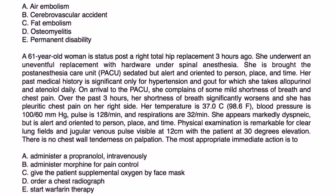Finally, a 61-year-old woman is status post a total hip replacement under spinal anesthesia. Brought to the PACU sedated but alert and oriented, she complains of mild shortness of breath and chest pain. Over three hours, her shortness of breath significantly worsens with pleuritic chest pain on the right side. Vitals: BP 100, pulse 128, respirations 32. She appears markedly dyspneic but alert. Exam shows clear lung fields and JVP visible at 12 with the patient at 30 degrees elevation. No chest wall tenderness.